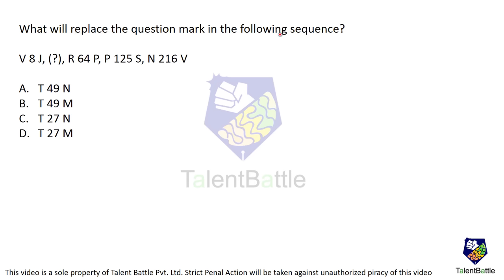What will replace the question mark in the following sequence? If you observe carefully, the numbers in between — 8, 64, 125, and 216 — are nothing but 2 cubed, 4 cubed, 5 cubed, and 6 cubed. So definitely here we have to get 3 cubed, which is 27. So option A and option B get cancelled out completely.